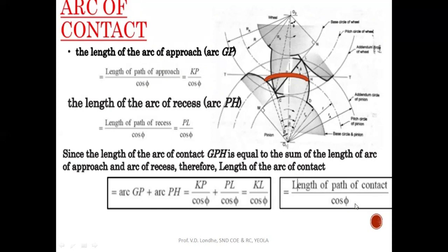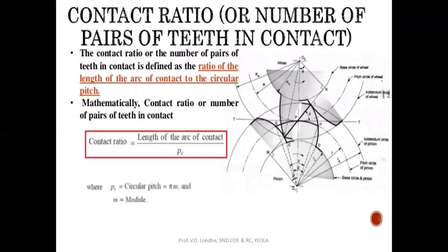The contact ratio is a unitless quantity defined as the ratio of the total length of path of contact to the circular pitch. This contact ratio value does not exceed 2. It indicates how many teeth are in contact — mostly a single tooth pair is in contact, but in a double-gearing system more than one tooth can be in contact, up to a maximum of two.